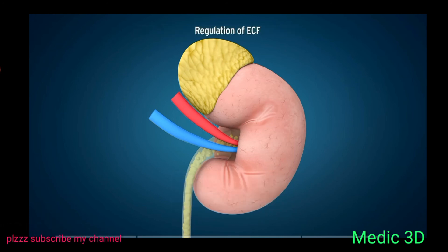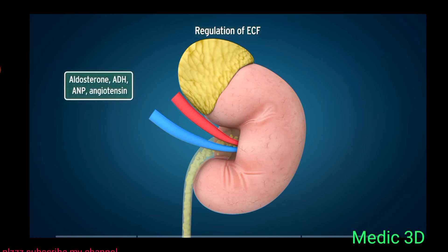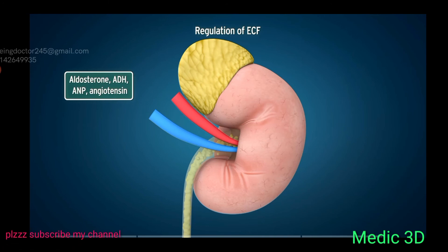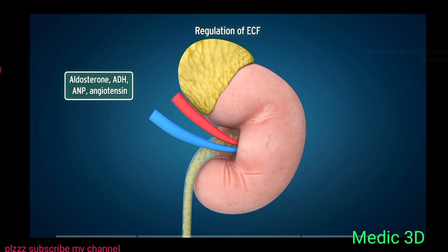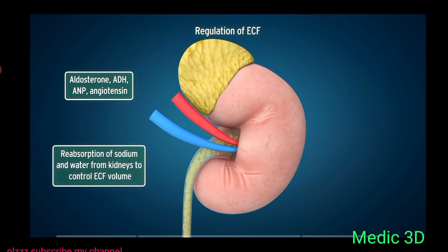Kidneys play an important role in the regulation of extracellular fluid (ECF) volume. Many hormones such as aldosterone, ADH, ANP, and angiotensin are involved in regulating ECF volume and act on kidney tubules. These hormones modify the reabsorption of sodium and water from kidneys to control ECF volume.